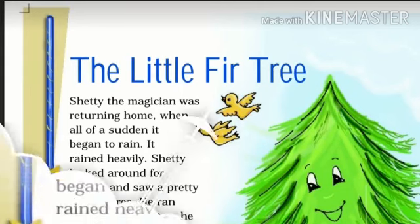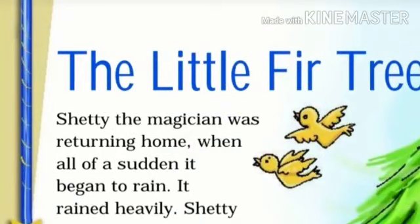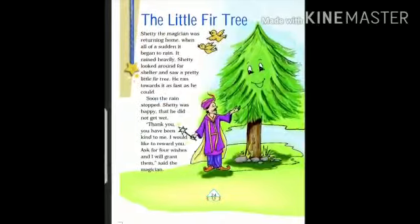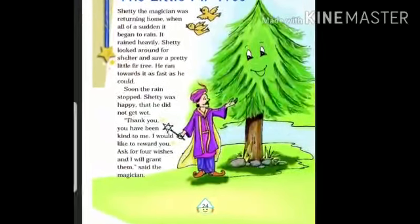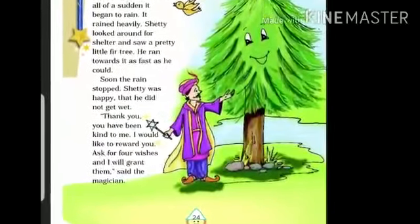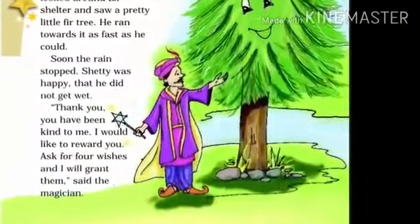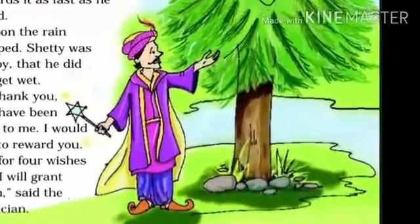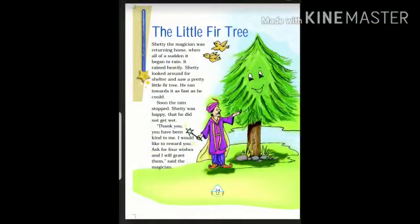The Little Fir Tree. Shetty the magician was returning home when all of a sudden it began to rain. It rained heavily. Explanation: This chapter is in past tense. Here is the story of one tree and this story teaches a moral. Shetty the magician was going back to his home. Suddenly, rain started, so obviously everyone finds shelter — a place where we can save ourselves from rain. Same thing Shetty the magician did in this chapter.